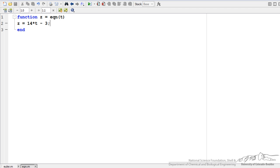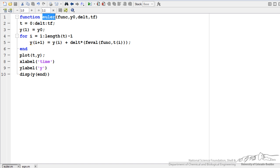So finally, I want to show you how to do this in MATLAB. So I have set up my simple equation as a function here, and keep in mind that this equation is the right-hand side, so dy/dt is equal to 14t minus 3. I have also set up a function Euler.